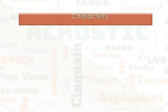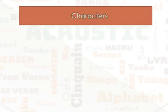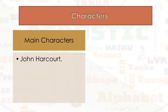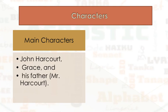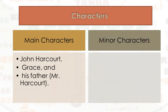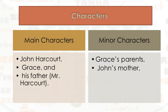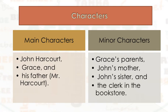As we have said in the previous lecture, we have main characters who are John Harker, Grace, and John's father, Mr. Harker. On the other hand, we have minor characters who are Grace's parents, John's mother, John's sister, and the clerk in the bookstore.